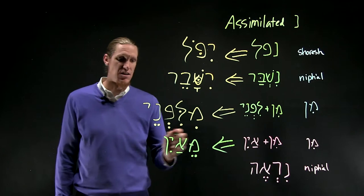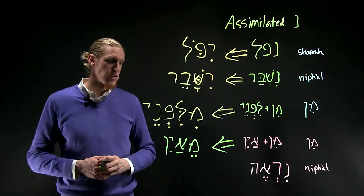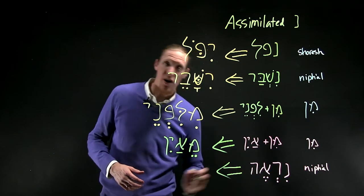So me-ein, from where? Me-ein tavo is what the sailors asked Jonah in chapter one. From where are you coming?